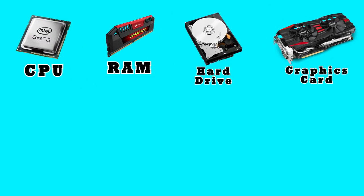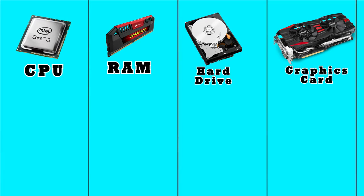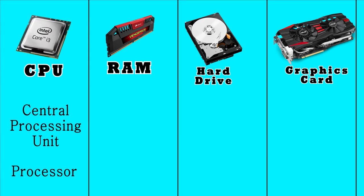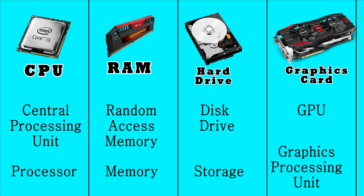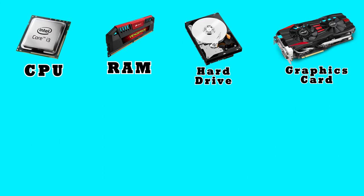The four main components to keep in mind here are CPU, RAM, hard drive, and graphics card. Now first things first, I'm going to establish some terminology. Keep in mind that CPU is also known as the Central Processing Unit or processor — these terms all refer to the same thing, they are completely interchangeable. RAM stands for Random Access Memory and is often referred to as just memory. A hard drive is often referred to as a disk drive or storage. And a graphics card is also known as a GPU, or graphics processing unit. For this explanation, I'll be using the terms CPU, RAM, hard drive, and graphics card.